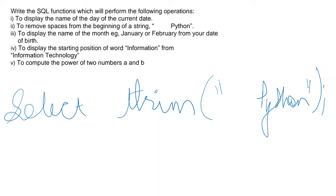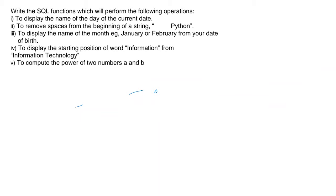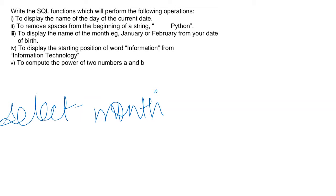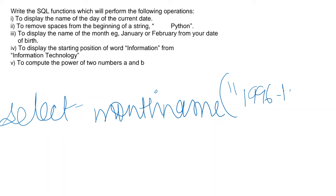The query will be executed correctly and the spaces will get removed. The next question is to give the month name from your date of birth. So we write SELECT MONTHNAME — just like DAYNAME, we have a MONTHNAME function. Inside the bracket, whatever the birth date is, make sure you write it in the format YYYY-MM-DD. This is how you'll get the month name from your birth date.